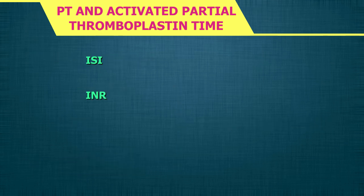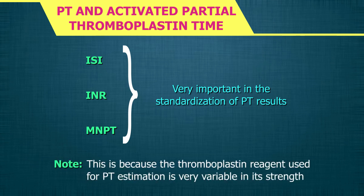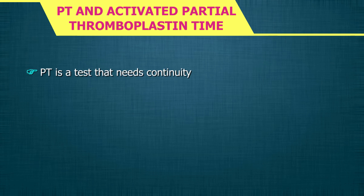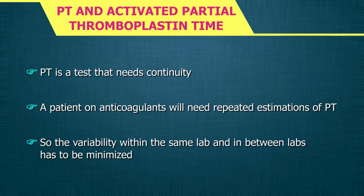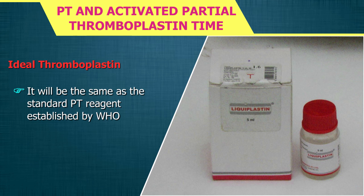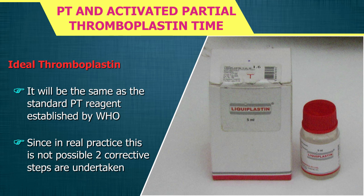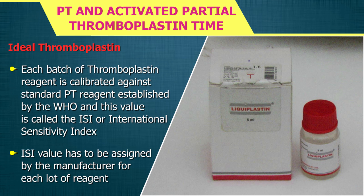ISI, INR, and MNPT are three numbers very important in the standardization of PT results, because the thromboplastin reagent used for PT estimation is variable in its strength. PT is a test that needs continuity; a patient on anticoagulants will need repeated estimations, so variability within and between labs must be minimized. Each batch of thromboplastin reagent is calibrated against the WHO standard PT reagent, and this value is called the ISI (International Sensitivity Index). The ISI value must be assigned by the manufacturer for each lot of reagent.